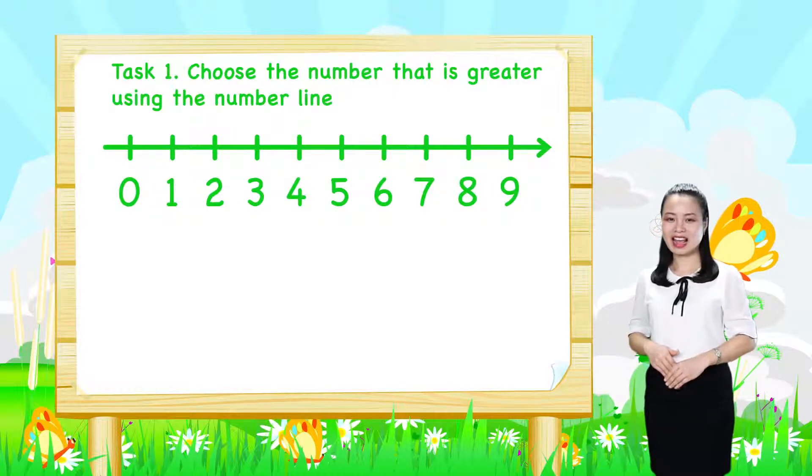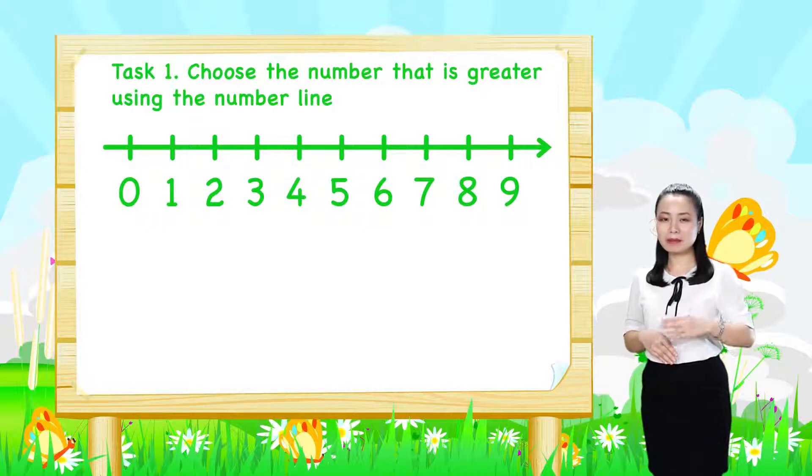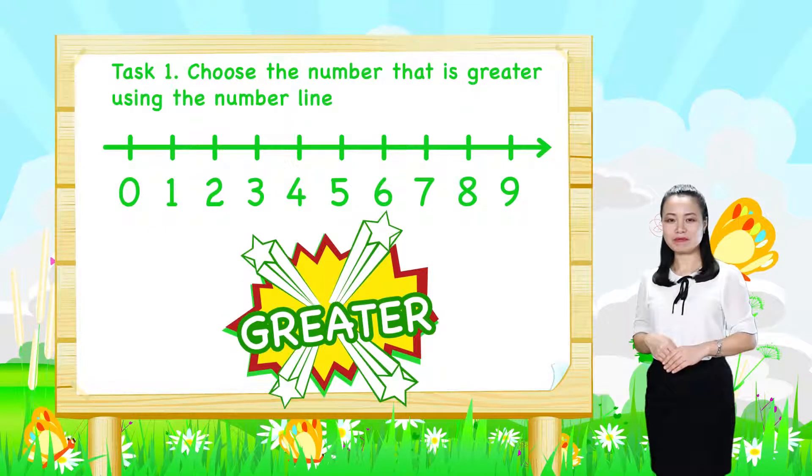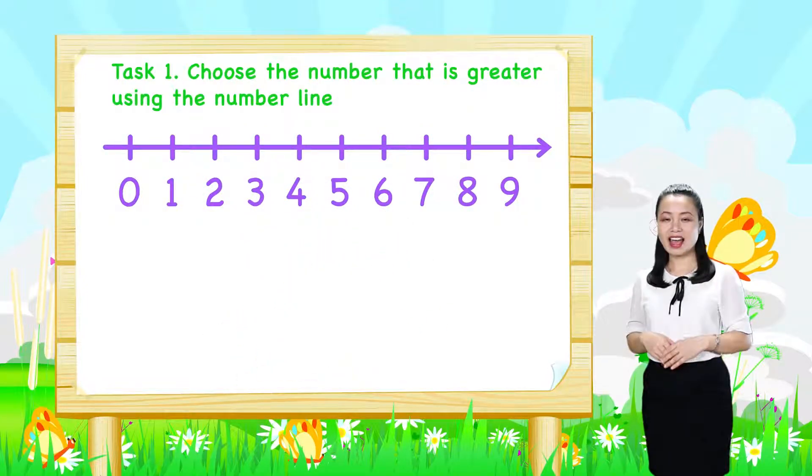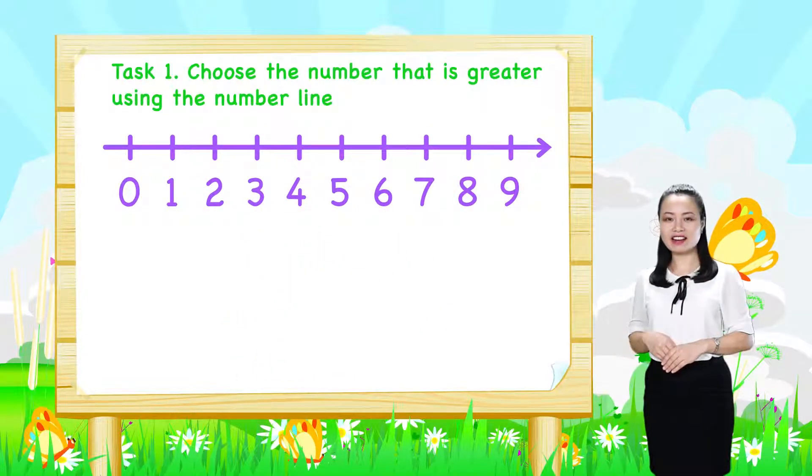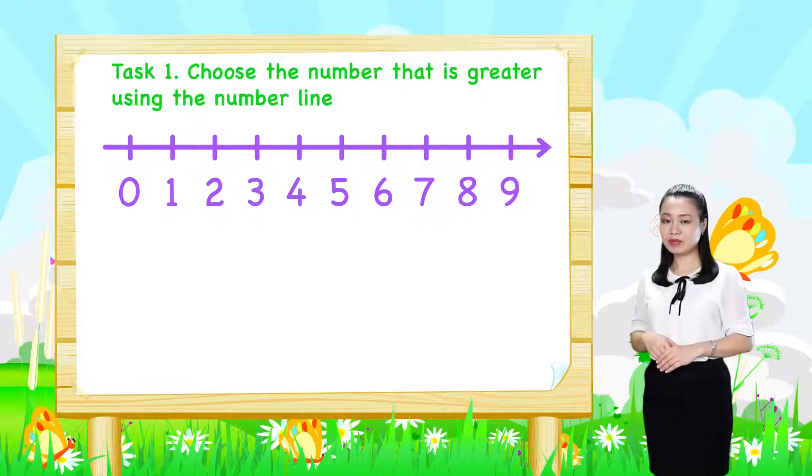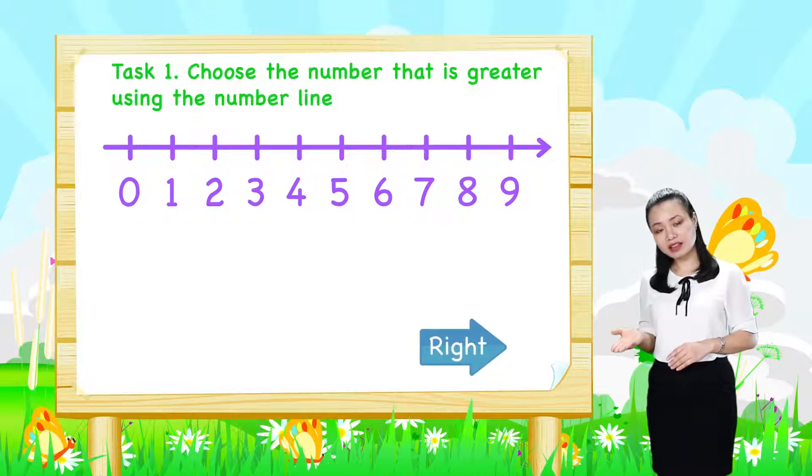Now, let's find the answers together. To choose a number that is greater, first look at the number line. Then, decide which number is to the right of the other number.